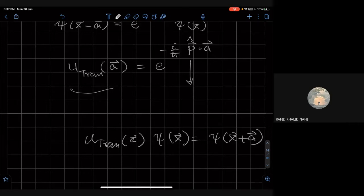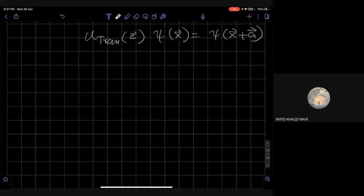And now comes the magic. Suppose that, because all the P's commute, right? All the different components of P's commute. So we can translate along the x-axis, y-axis, and vice versa, they all commute.